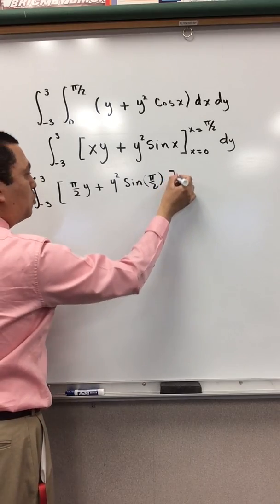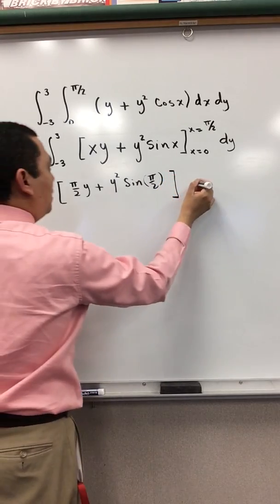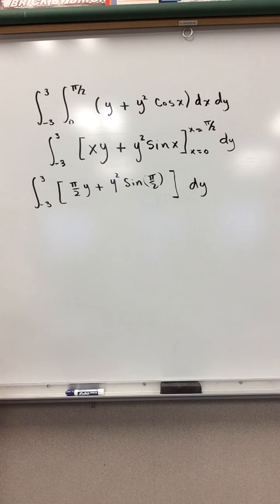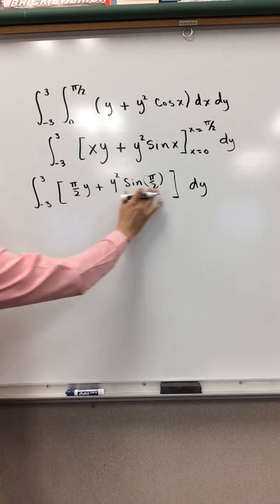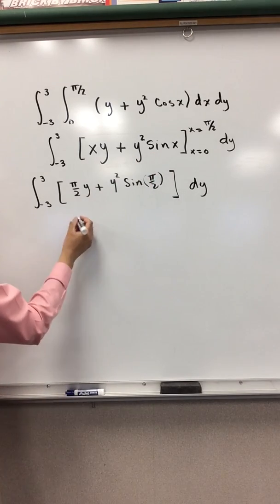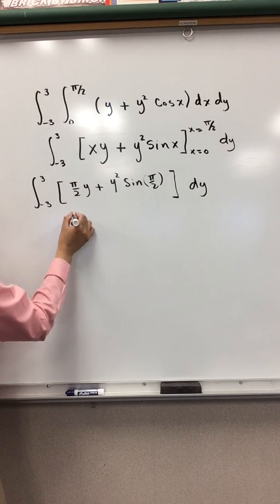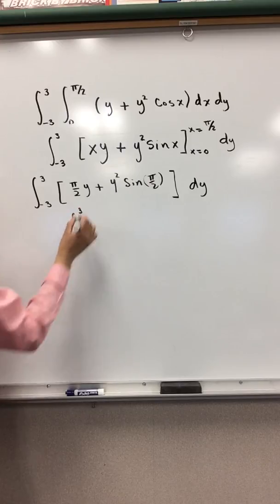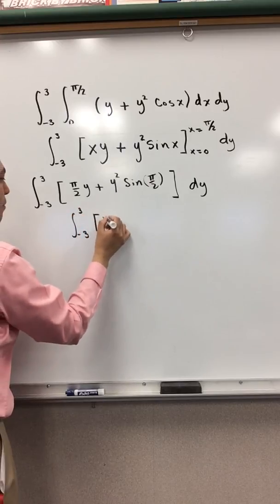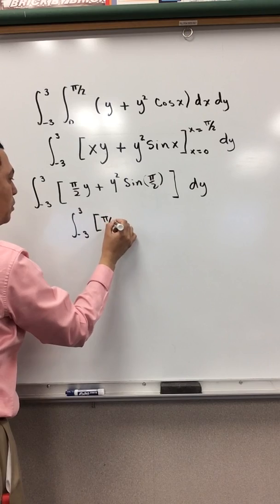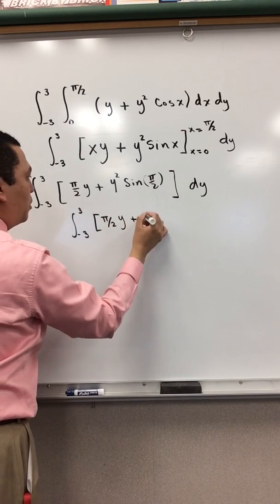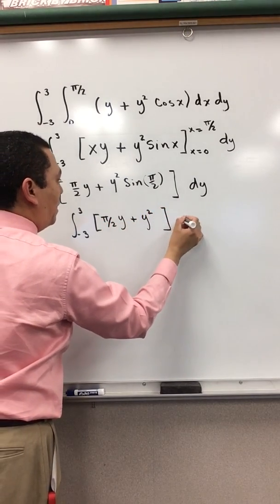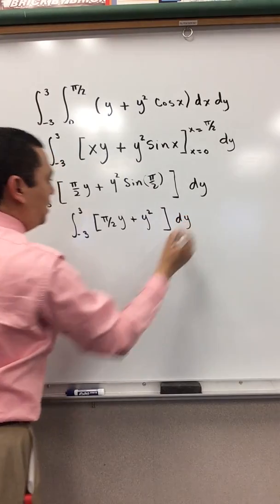Closing the bracket dy. Now, sin(π/2) equals 1. So I will have the integral from negative 3 to 3 of (π/2)·y + y² dy.